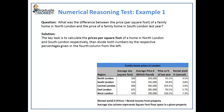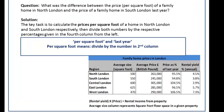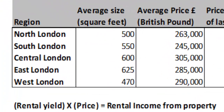The keywords in the question are 'per square foot' and 'last year'. To calculate per square foot values, you will just need to take the prices of homes in North and South London and divide them by their respective average sizes.